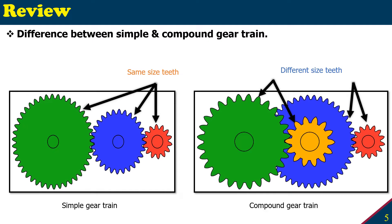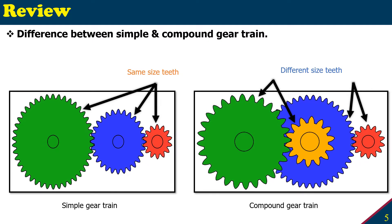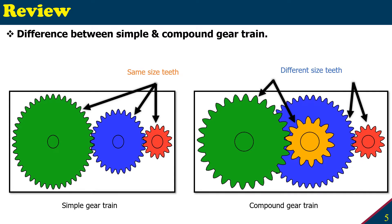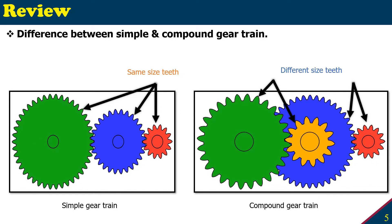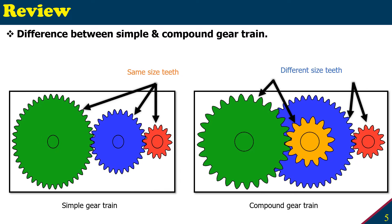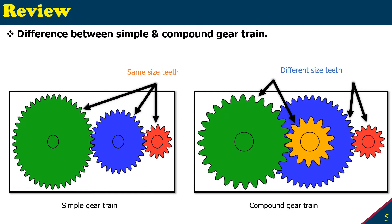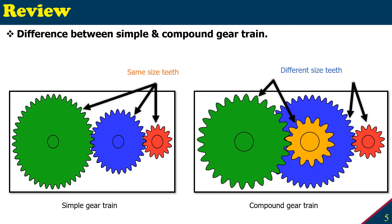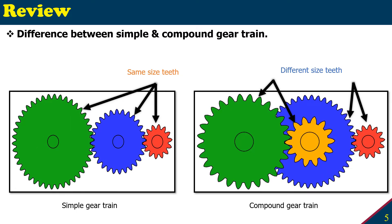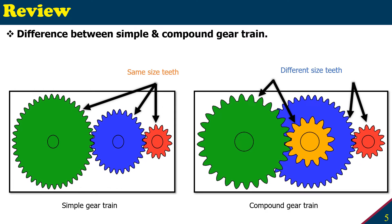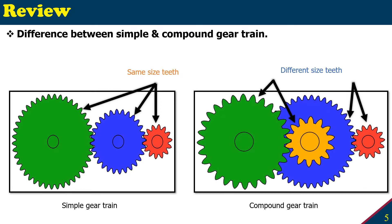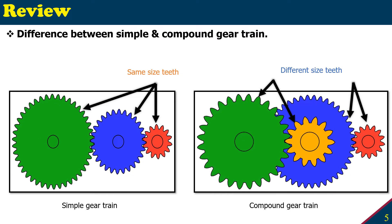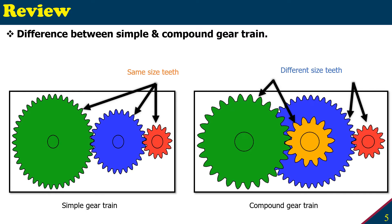Another difference is that for a simple gear train, all teeth must be the same size because the gears mesh directly with each other and there is only one gear per shaft. For a compound gear train, since one shaft has multiple gears, those gears can have different teeth sizes. For example, green-to-yellow can have one teeth size and blue-to-red can have a different size, because blue and yellow are not meshing — they are just on the same shaft. This allows different teeth sizes in a compound gear train.